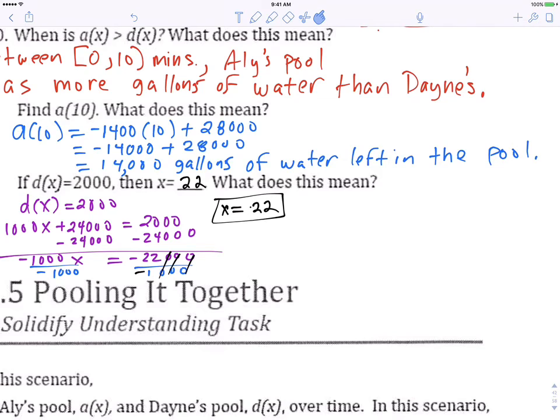So, what this means is that after 22 minutes, Denae's pool has 2,000 gallons left. That's what that means, okay? So after 22 minutes, Denae's pool has 2,000 gallons in it. I'll write that down.